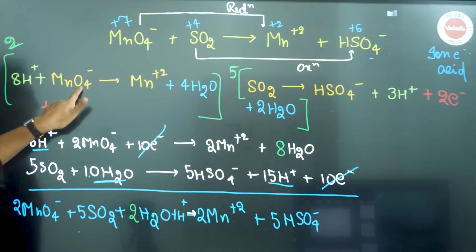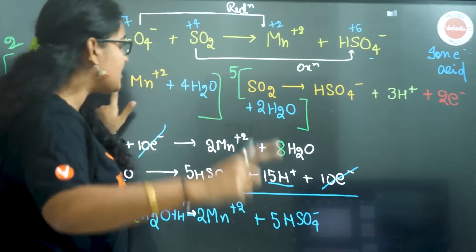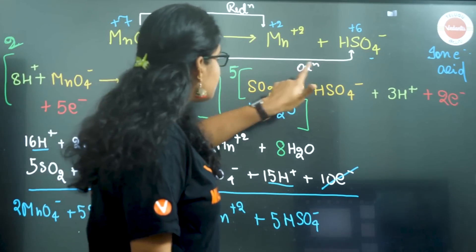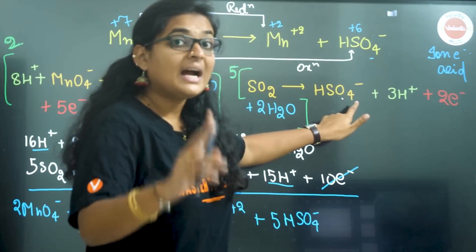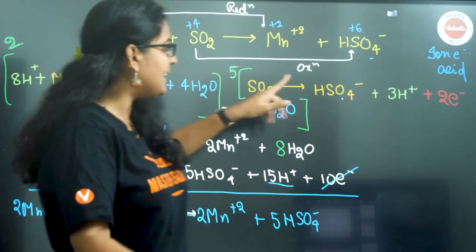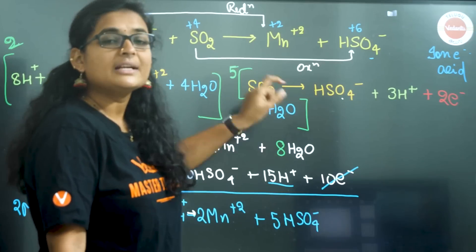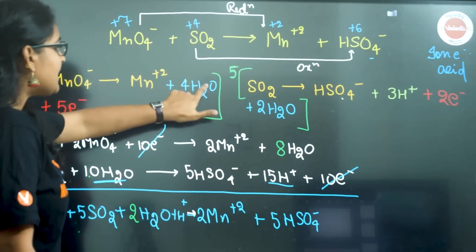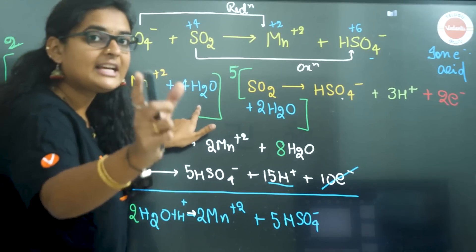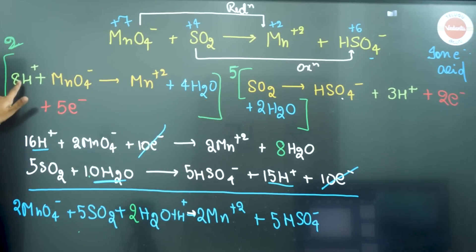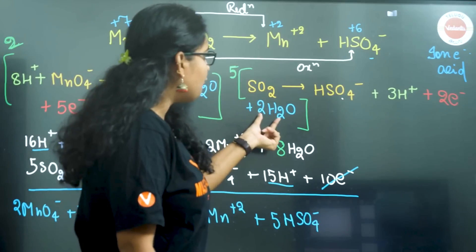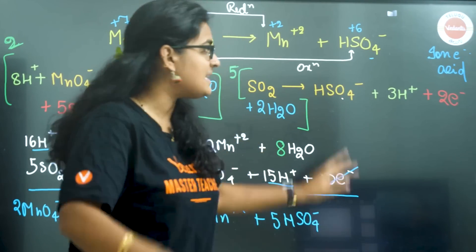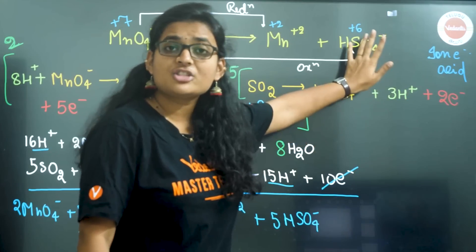Oxygen balance. In the reduction half-reaction, there are 4 oxygens on the left and 0 on the right, so add 4 H2O on the right. In the oxidation half-reaction, there are 2 oxygens in SO2 but 4 needed for HSO4−, so add 2 H2O. Next, hydrogen balance: the 4 H2O added give 8 H+. For the oxidation half-reaction, you need 1 hydrogen but have 4, so you are adding 3 H+. This is acidic medium.